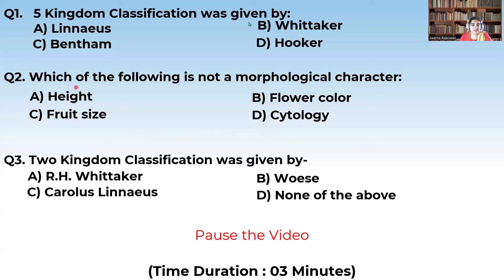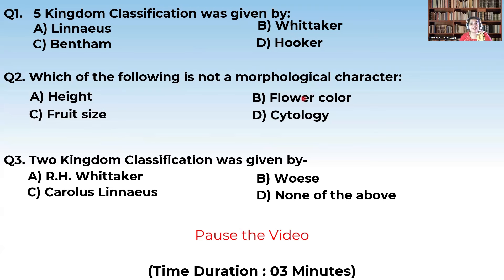Coming to the second question: which of the following is not a morphological character? Options: Height, Root Size, Flower Color, and Cytology. Morphology deals with size, shape, color, etc. Height, Root Size, and Flower Color are morphological characters. Since the question asks which is NOT a morphological character, the correct answer is Cytology.